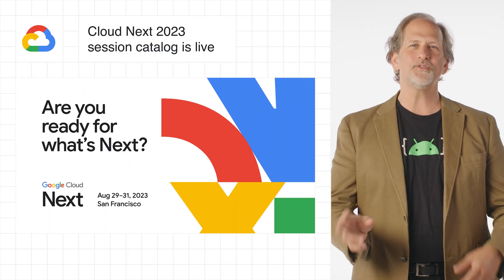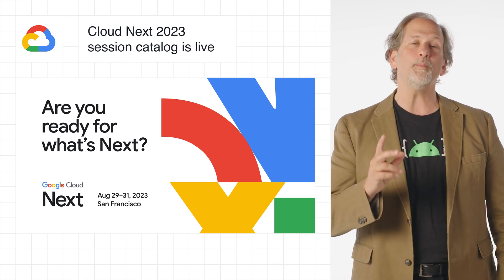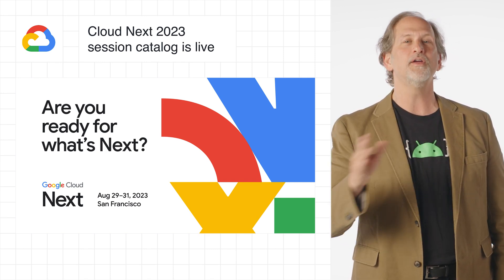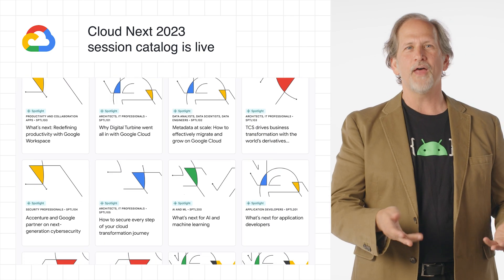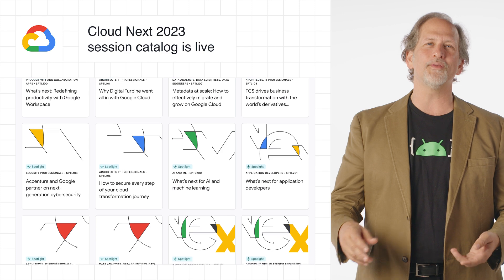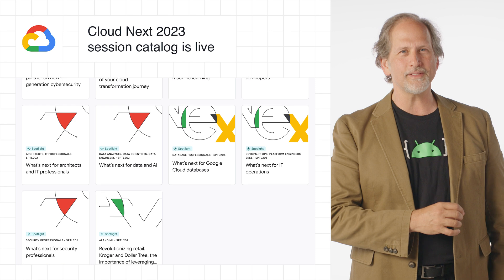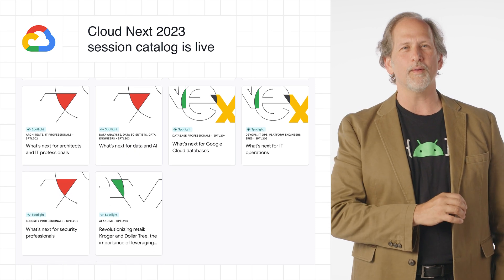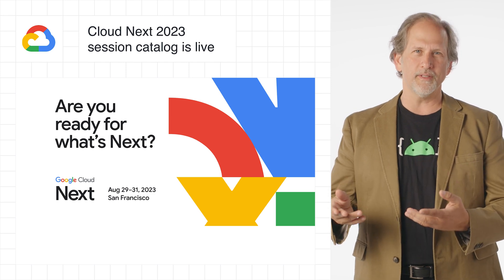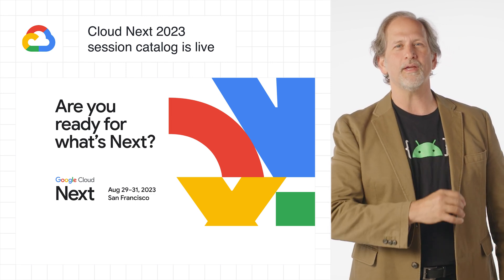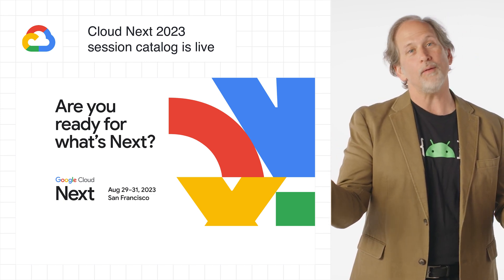The Cloud Next 2023 session catalog is live with the full list that will be available to you in person in San Francisco this August 29 through 31st, covering topics such as data analytics, the latest on large language models, scaling your hot new idea, securing your latest deployment, serverless best practices, managed Kubernetes, and more. Everyone is excited to be back in person, so join us to build, to learn, and most importantly, to network — as in network with actual humans, or learn about Google Cloud networking.